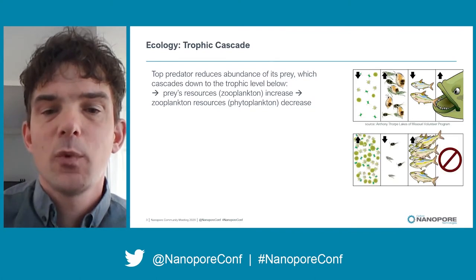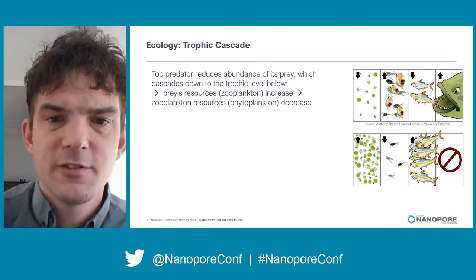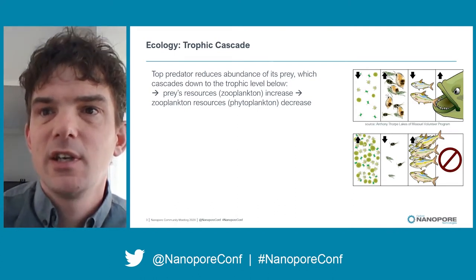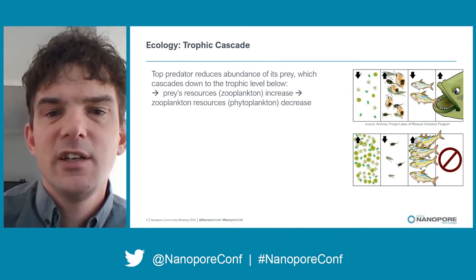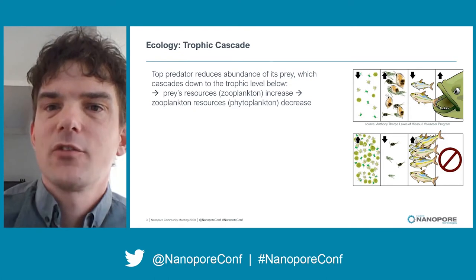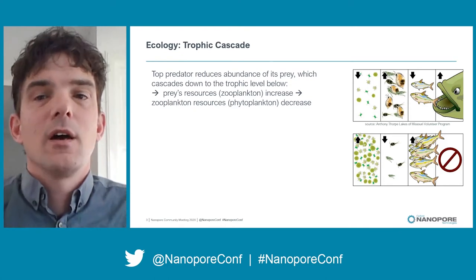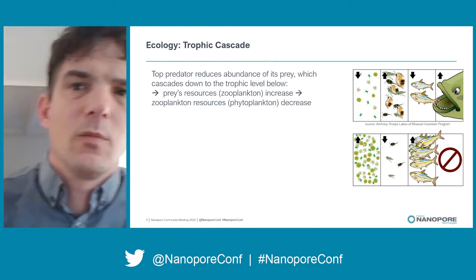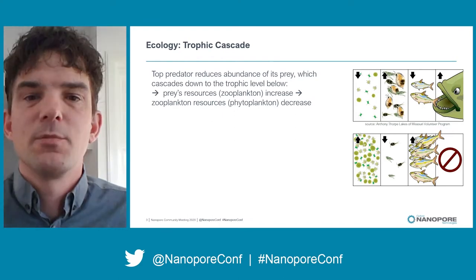What happens if you take away the top predators is that the prey species increase massively because they are suddenly relieved from predation. They will eat a lot of the zooplankton, which goes down. The food source of the zooplankton — the algae — go up. This can lead to, for instance, harmful algal blooms.